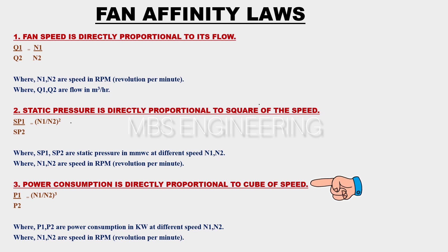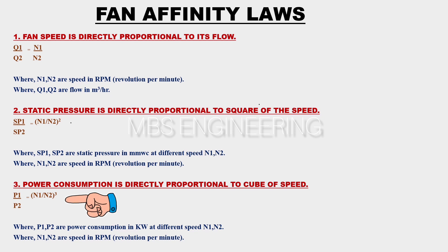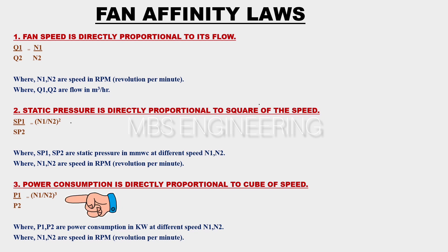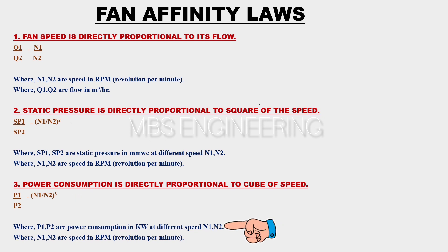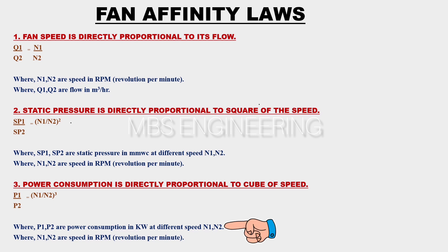Power consumption is directly proportional to the cube of speed. The power consumption P1 divided by P2 is directly proportional to the cube of speed N1 divided by N2. Where P1 and P2 are power consumption in kilowatts at different speeds N1 and N2, and N1 and N2 are speeds in RPM (revolutions per minute).